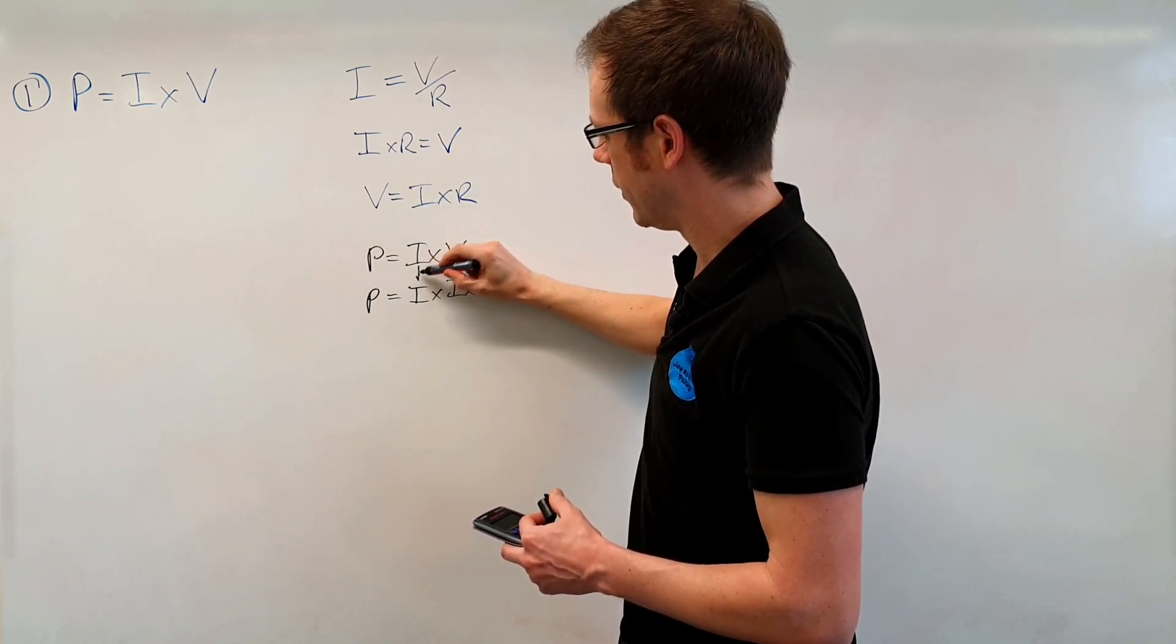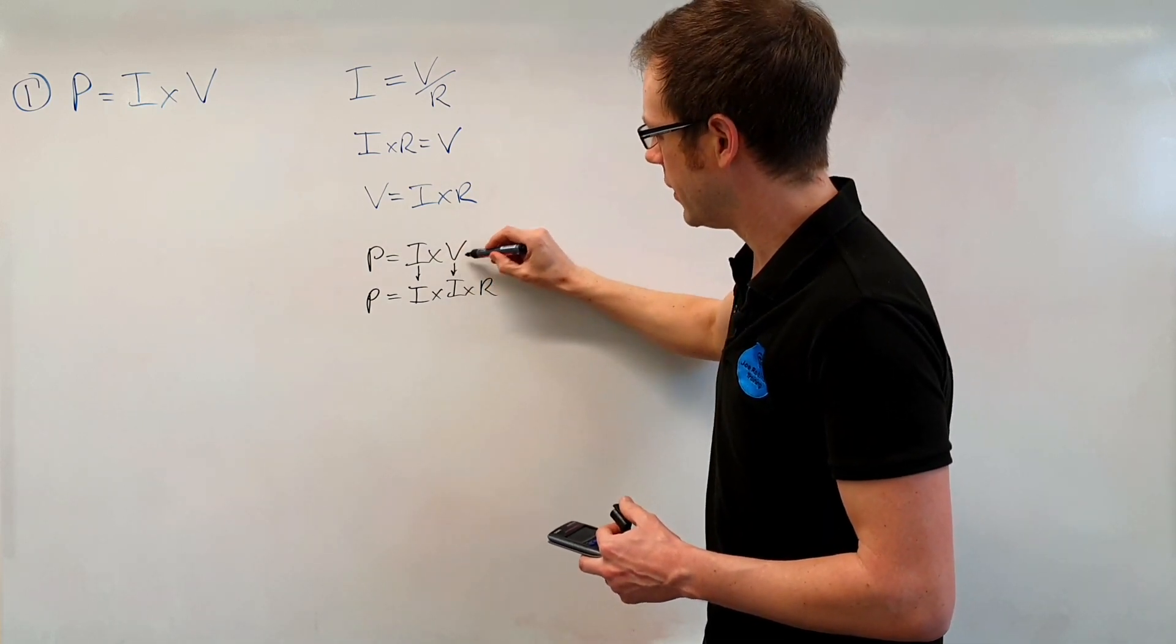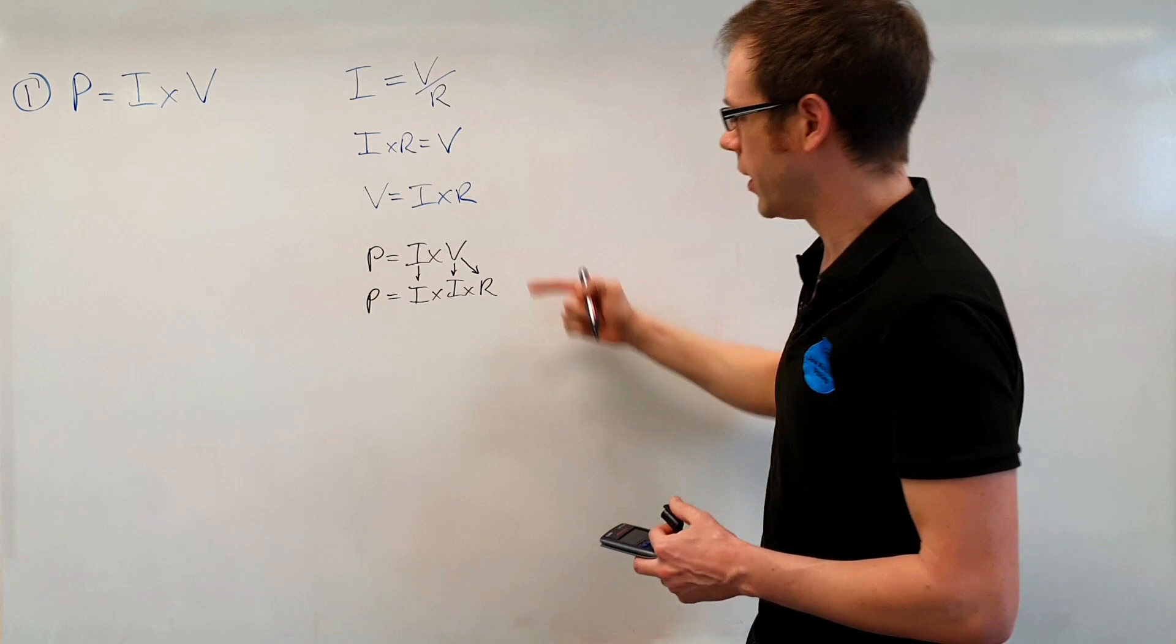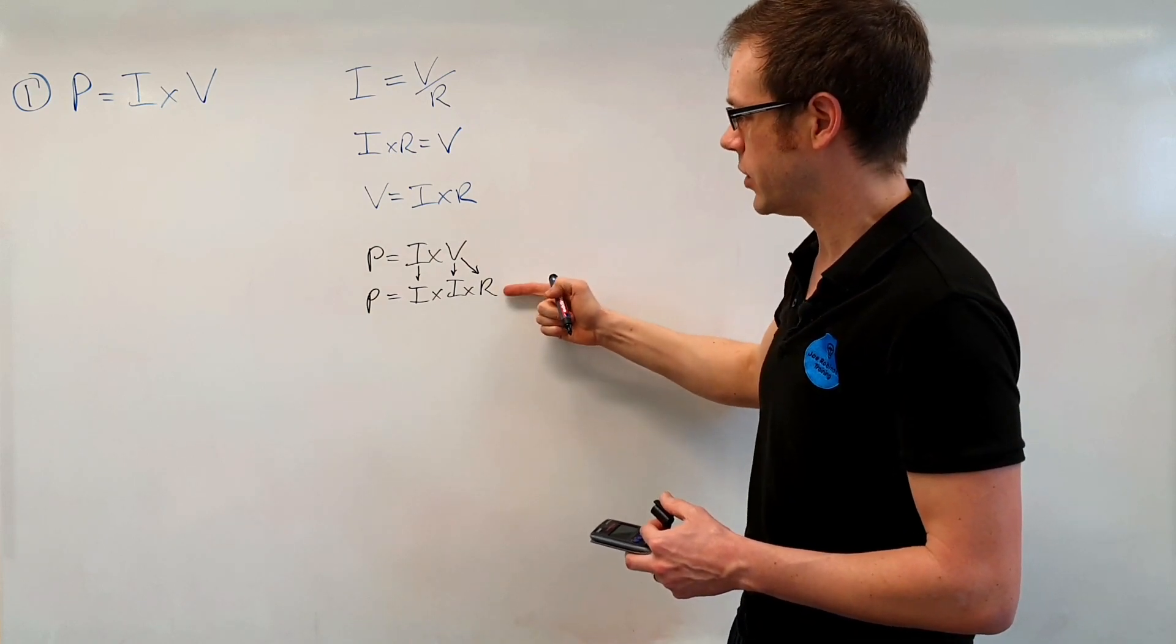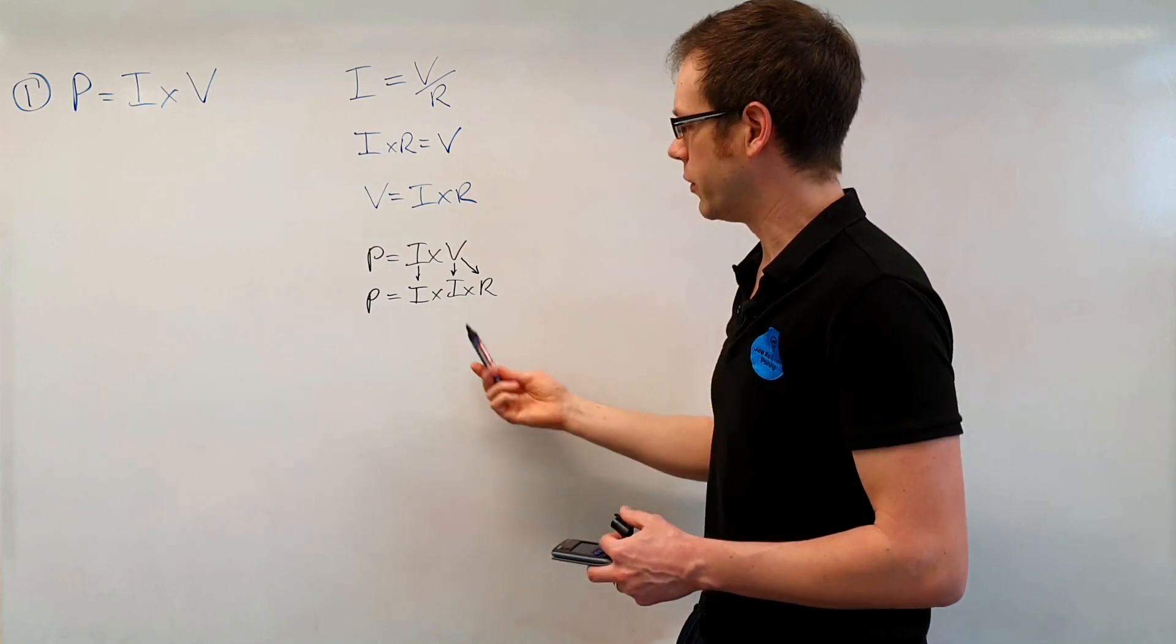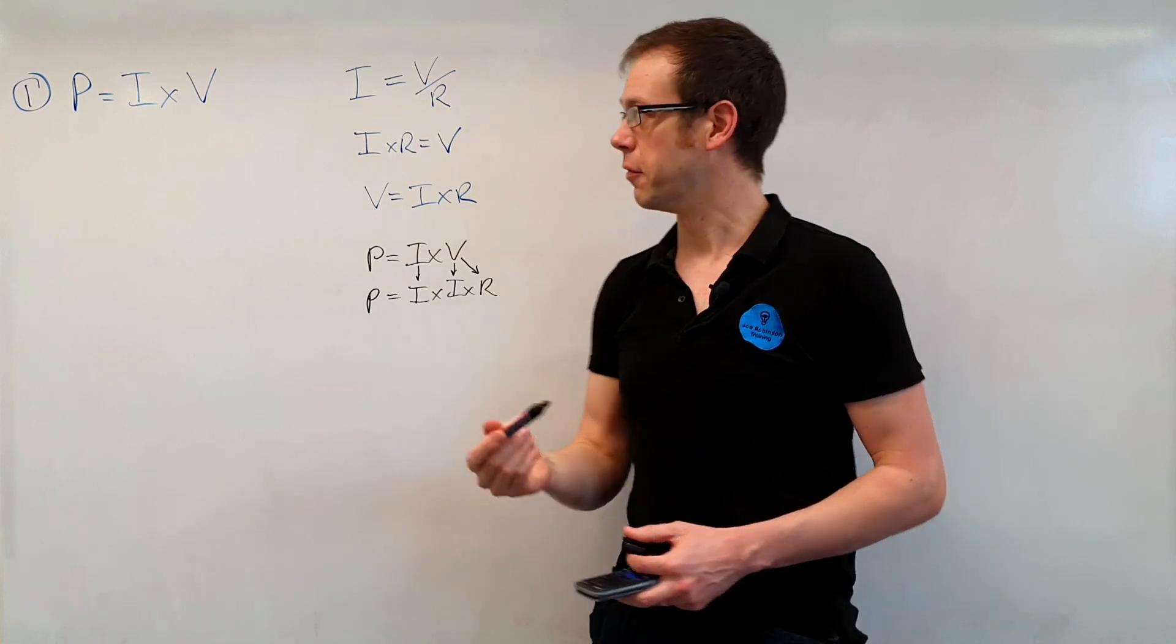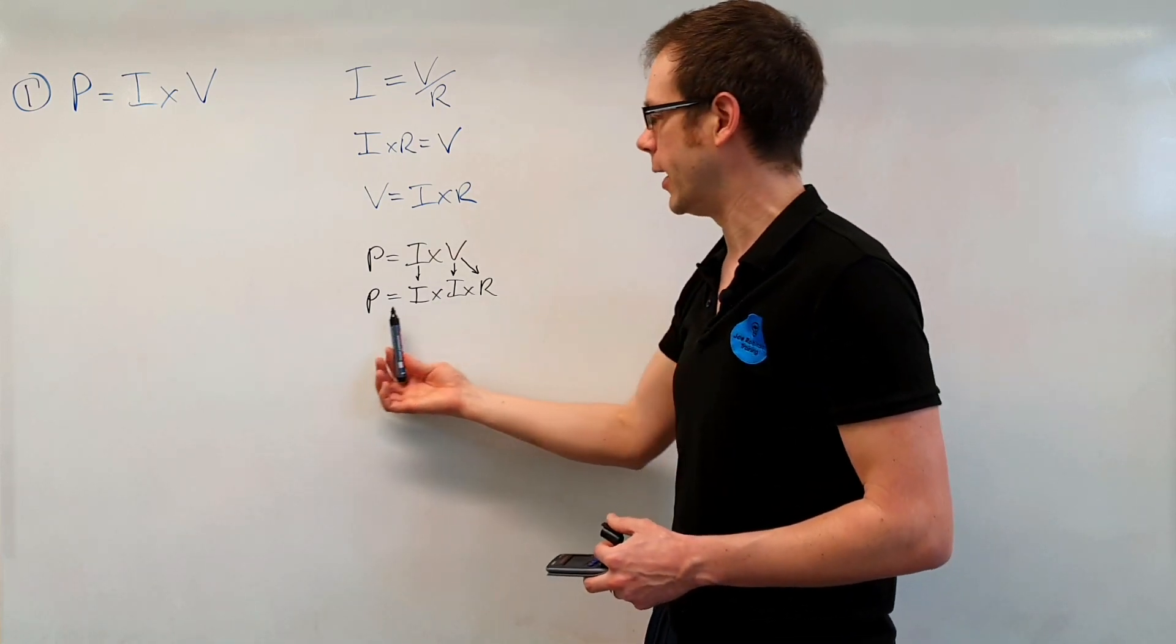So can you see this I has just remained in the formula and this V has now turned into I times R because V and I times R mean exactly the same thing. So what that means is we've got a situation where we've got P equals I times I times R. Now that's a little bit kind of clunky in terms of how that's been written out. So we would gather the terms here.